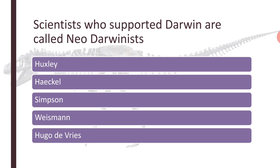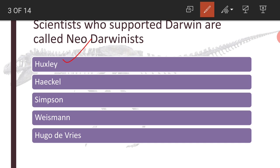Scientists who supported Charles Darwin are called Neo-Darwinists. The first and foremost scientist in the list is Huxley, who was called the bulldog of Charles Darwin because he used to follow Darwin like a shadow. The second scientist is Haeckel, who proposed the Recapitulation Theory, which states that ontogeny repeats phylogeny. Ontogeny is the developmental history and phylogeny is the ancestral history of an organism. The theories proposed by Huxley and Haeckel support Charles Darwin's concept of evolution.